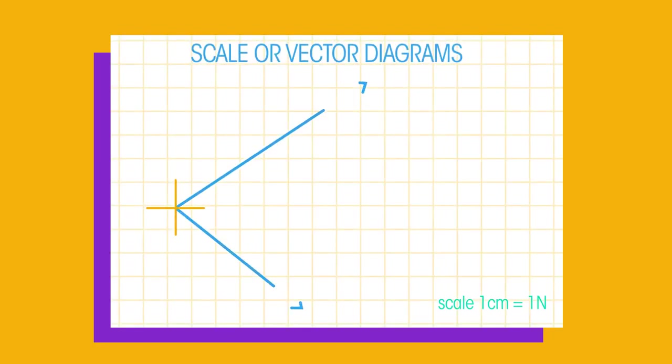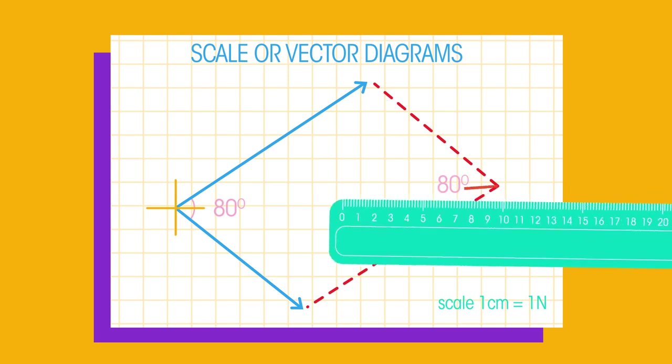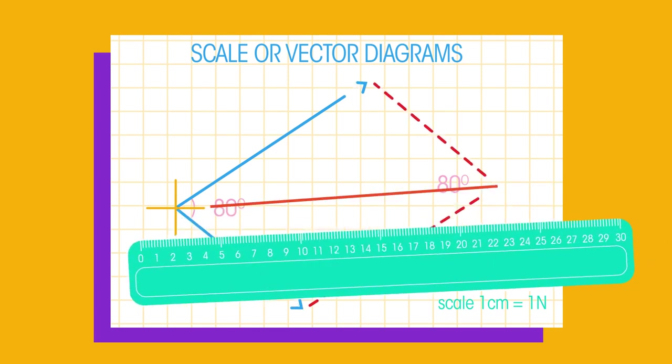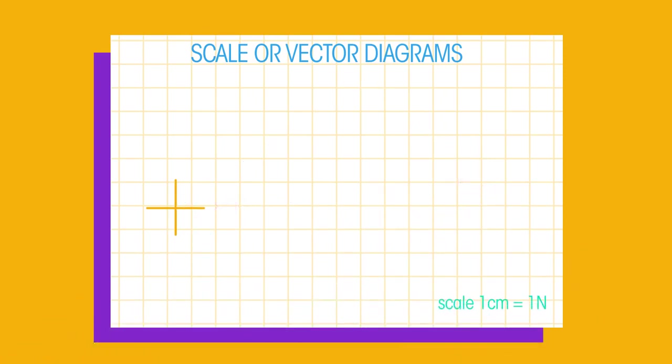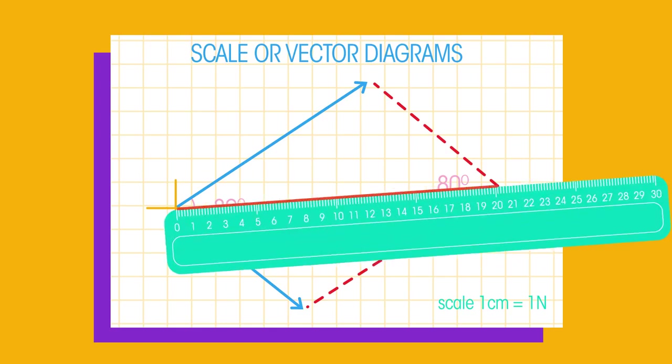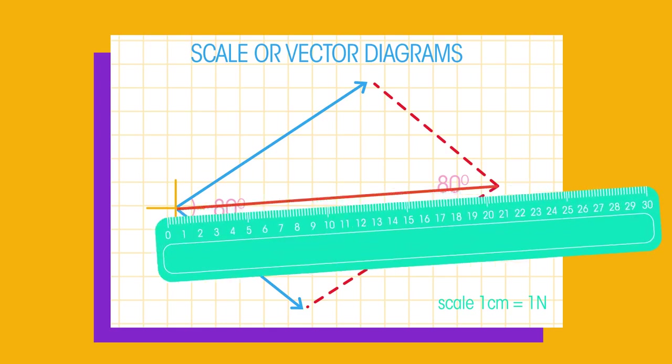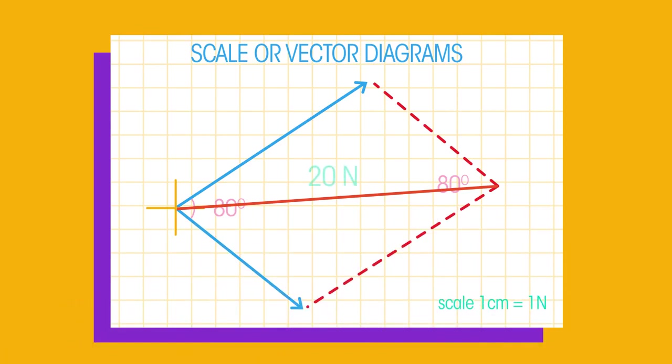Scale or vector diagrams show forces acting on an object and the angle between them. They can be used to calculate the resultant force. We draw scale diagrams using the following steps. Step 1, draw the arrows at the correct angles to represent the forces. Step 2, draw lines to make a parallelogram. And Step 3, measure the diagonal of the parallelogram. This is your resultant force.